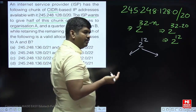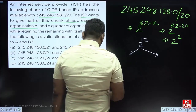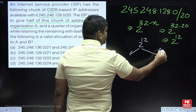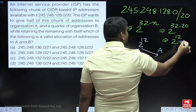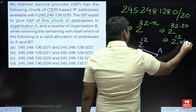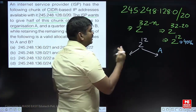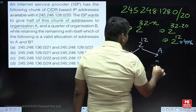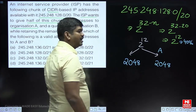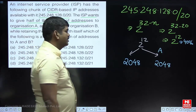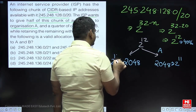We can give the left side or the right side to A. The total is 4096 addresses (2 power 12). Divided into 2 equal parts, each half has 2048 addresses, which is 2 power 11. So for Organization A, the mask becomes 2 power 32 minus 21, giving slash 21.